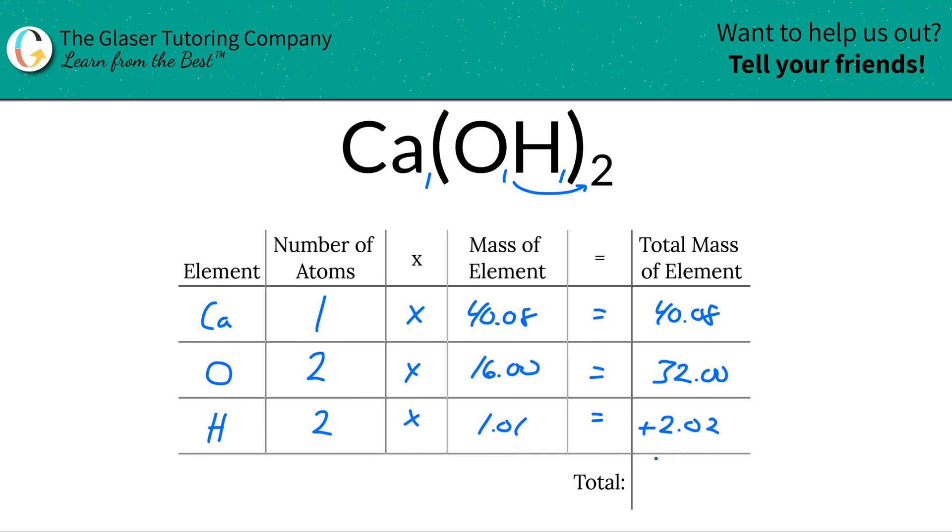To find now the mass in the entire compound, all you got to do, just add this column together now. Take all the total mass atoms together. So this works out to be about 74.10. Since we're calculating molar mass, the units are in grams per mole.